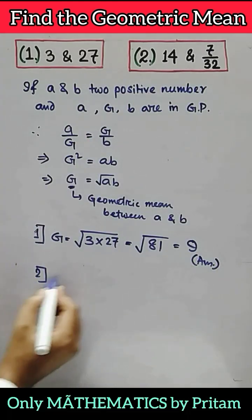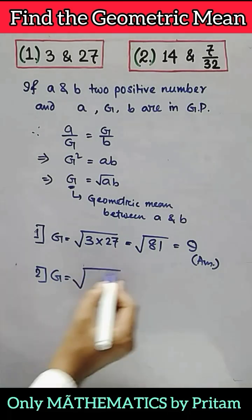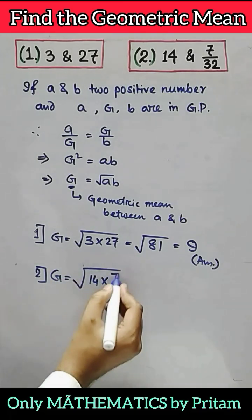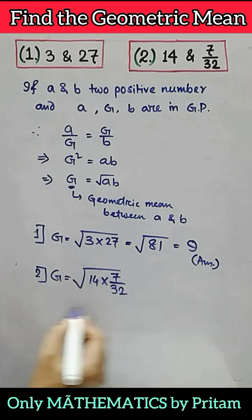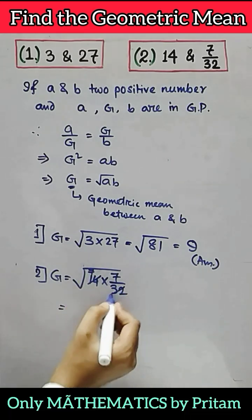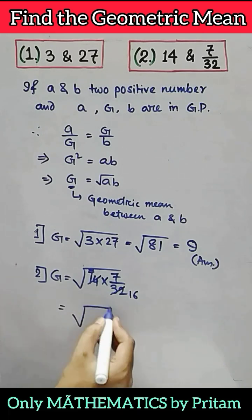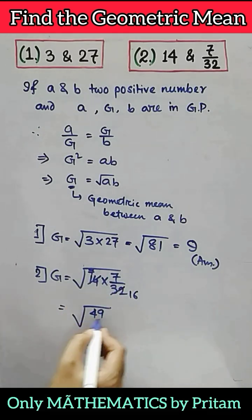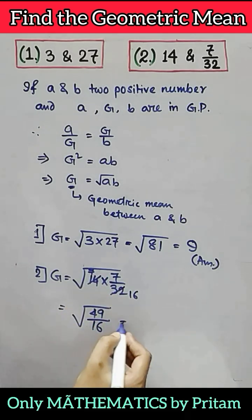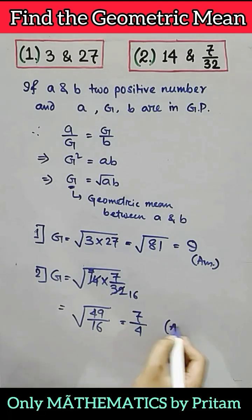Question number 2: the geometric mean will be √(14 × 7/32). Simplifying: 7 goes into 14 and 16 goes into 32, giving us √(49/16). √49 = 7 and √16 = 4, so 7/4 is the geometric mean.